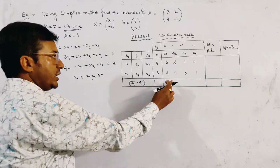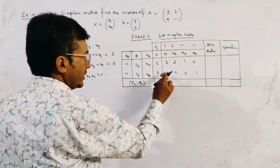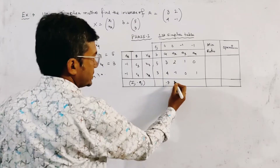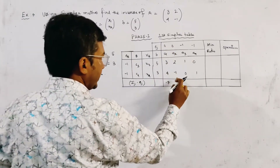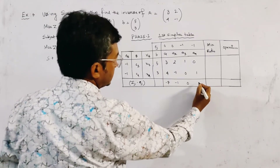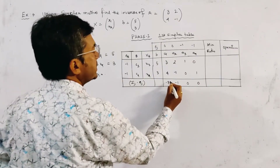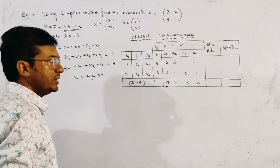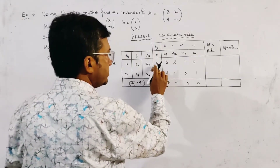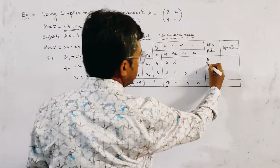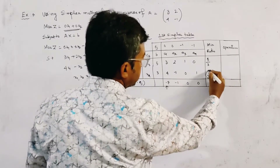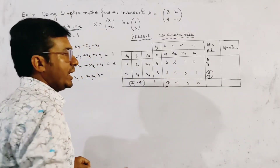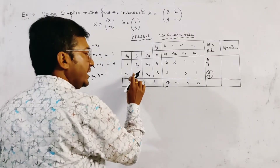Now we find the net evaluation Zj - Cj. The Zj - Cj values are: for A1, this is -7 - 0 = -7; for A2, this is -2 + 1 = -1; and the others are 0 and 0. The most negative value is -7, so the vector A1 is introduced into the basis — A1 is the incoming vector. We find the minimum ratio: 5/3 and 3/4. Clearly 3/4 is the minimum, so the key row is the row of A4, which is the outgoing vector. The key element is at the intersection of the key row and key column.